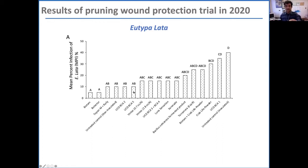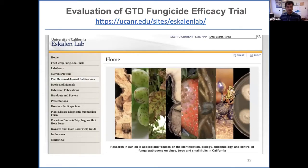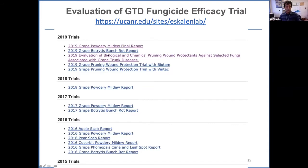All of these results are published online on our lab website. When you visit the lab website and go to 'Fruit Crop Fungicide Trials,' you will find results not only for pruning wound protection but also fungicide trials for powdery mildew, Botrytis, Plasmopara, and others. Please visit the website to get more information.